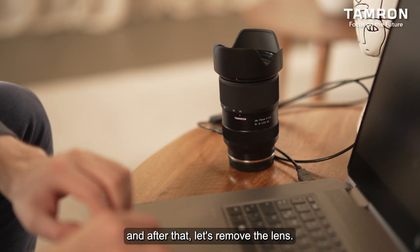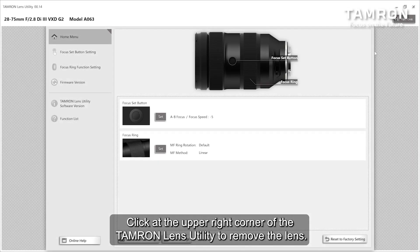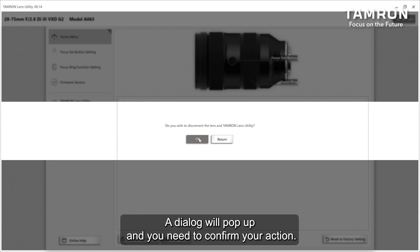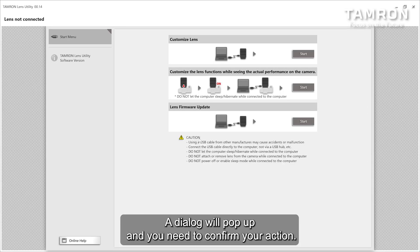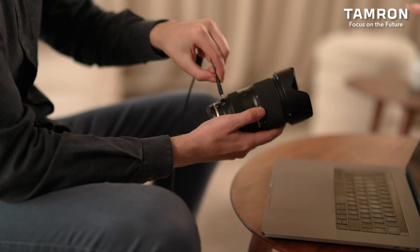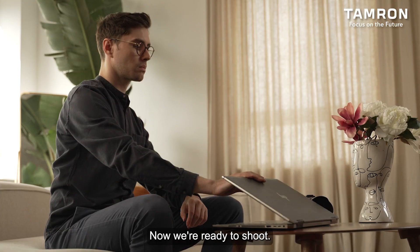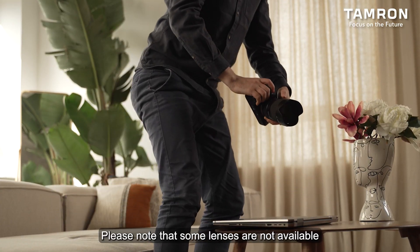After that, let's remove the lens. Click at the upper right corner of the Tamron lens utility to remove the lens. A dialog will pop up and you need to confirm your action. Now we're ready to shoot.